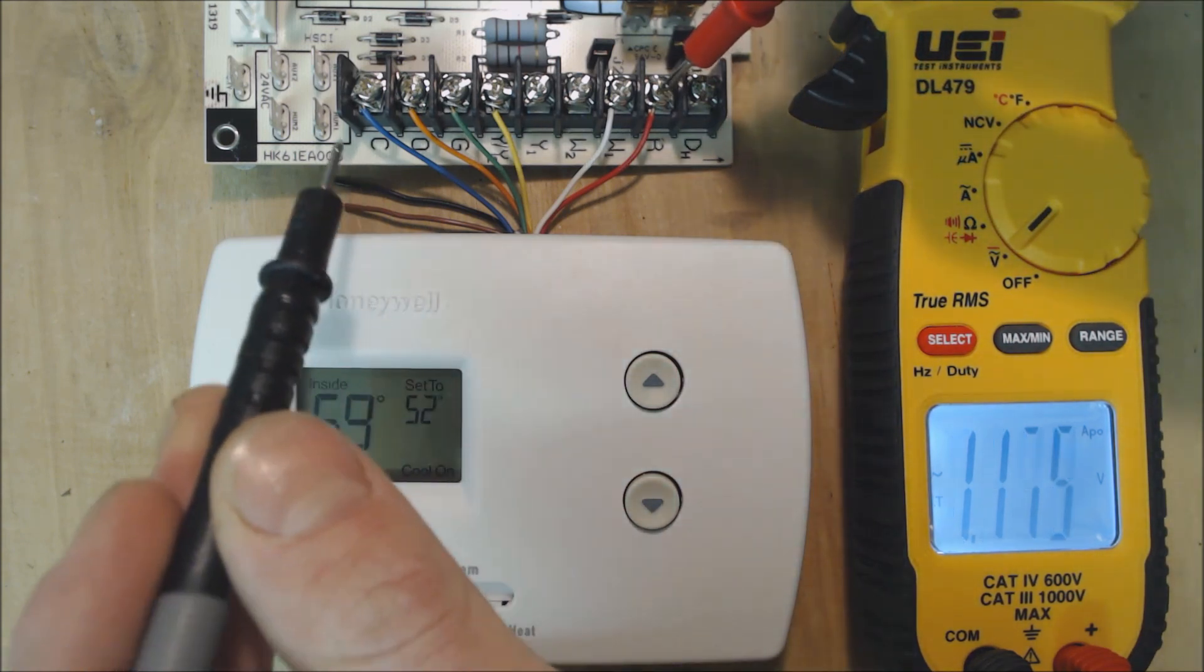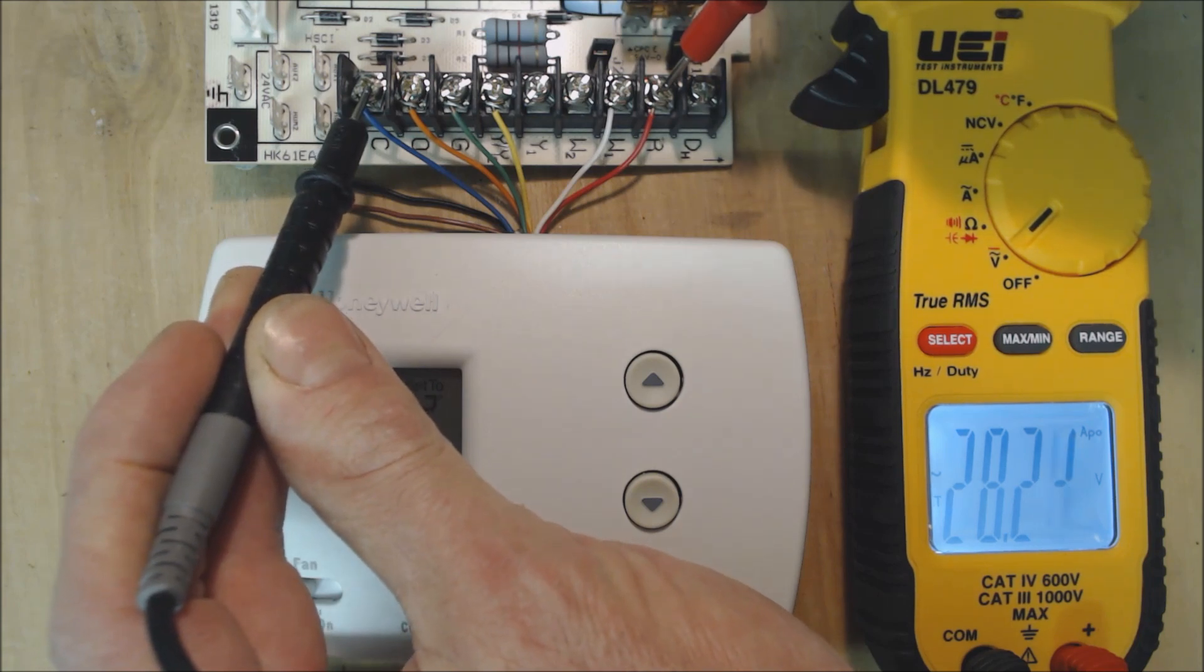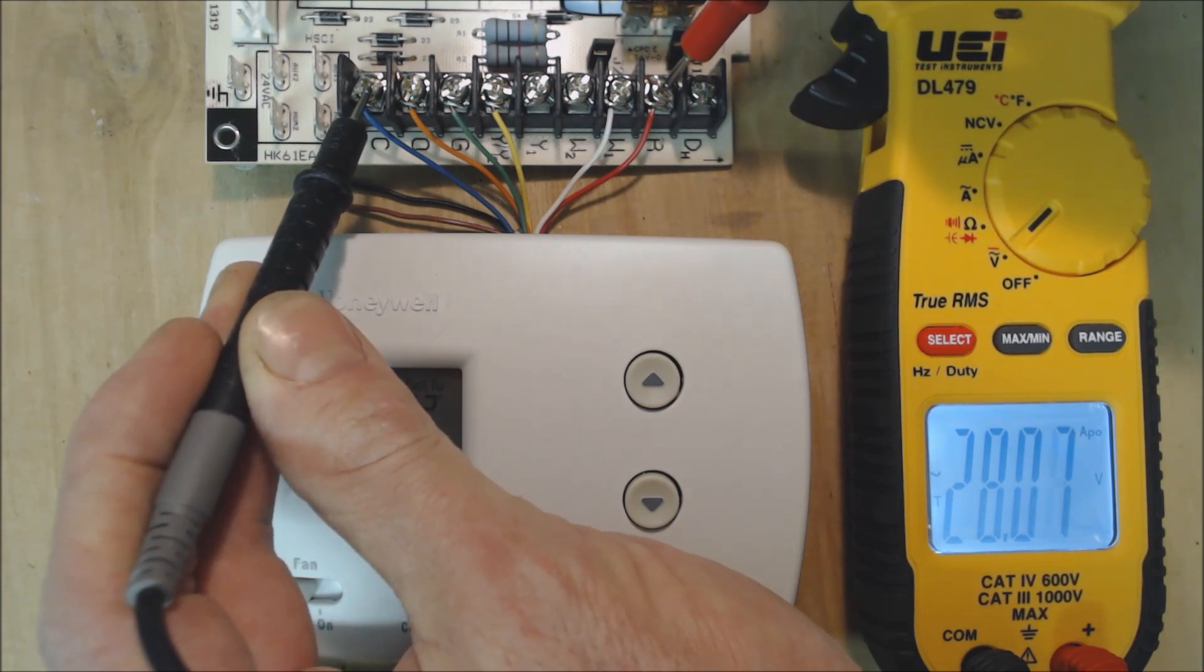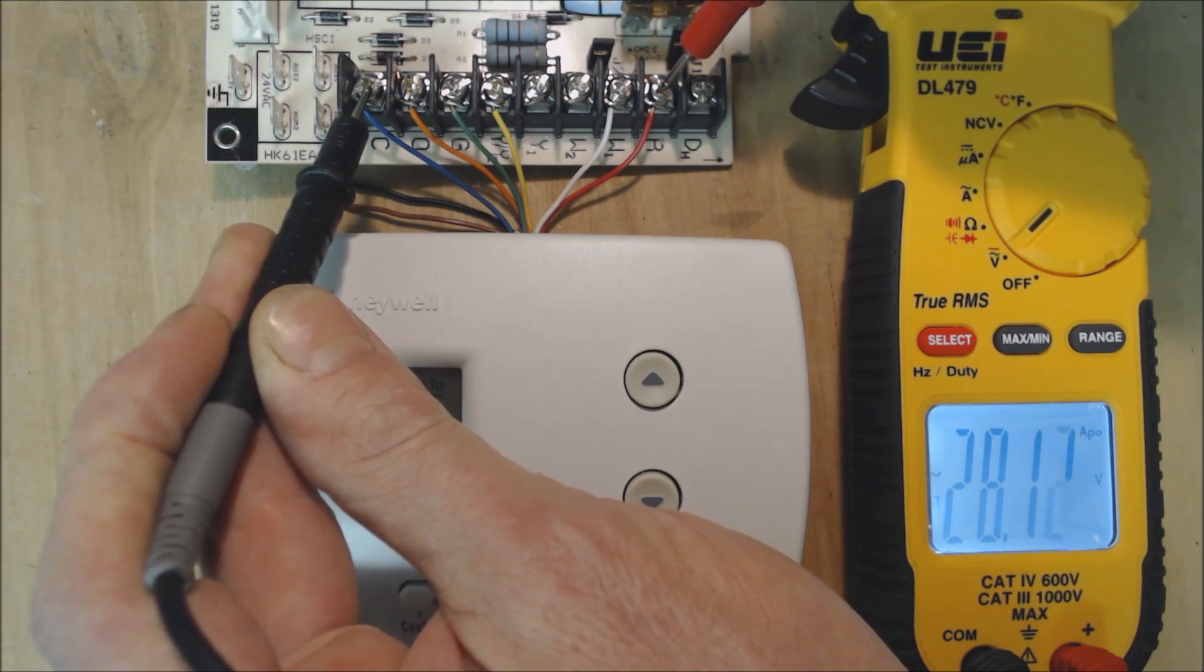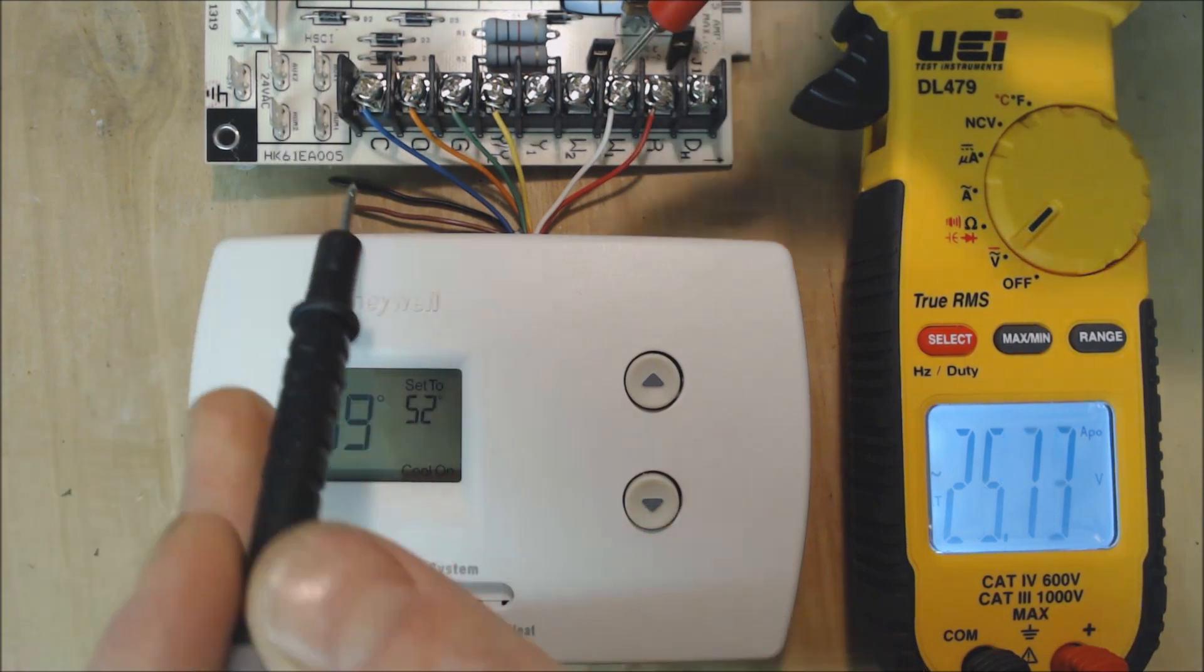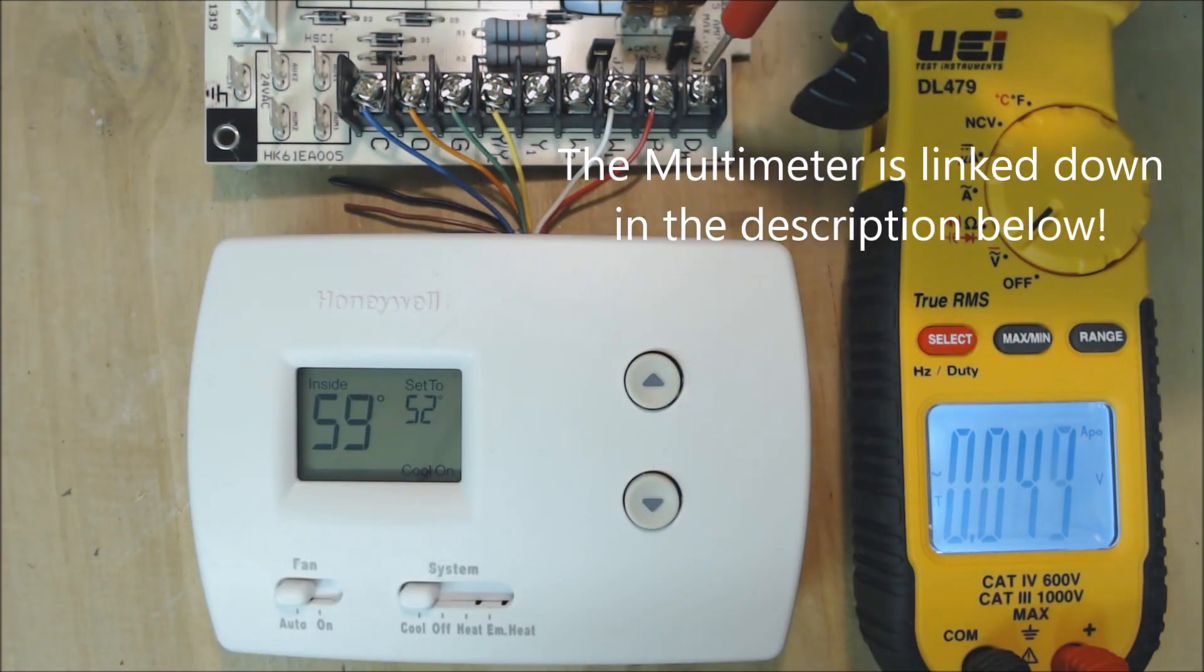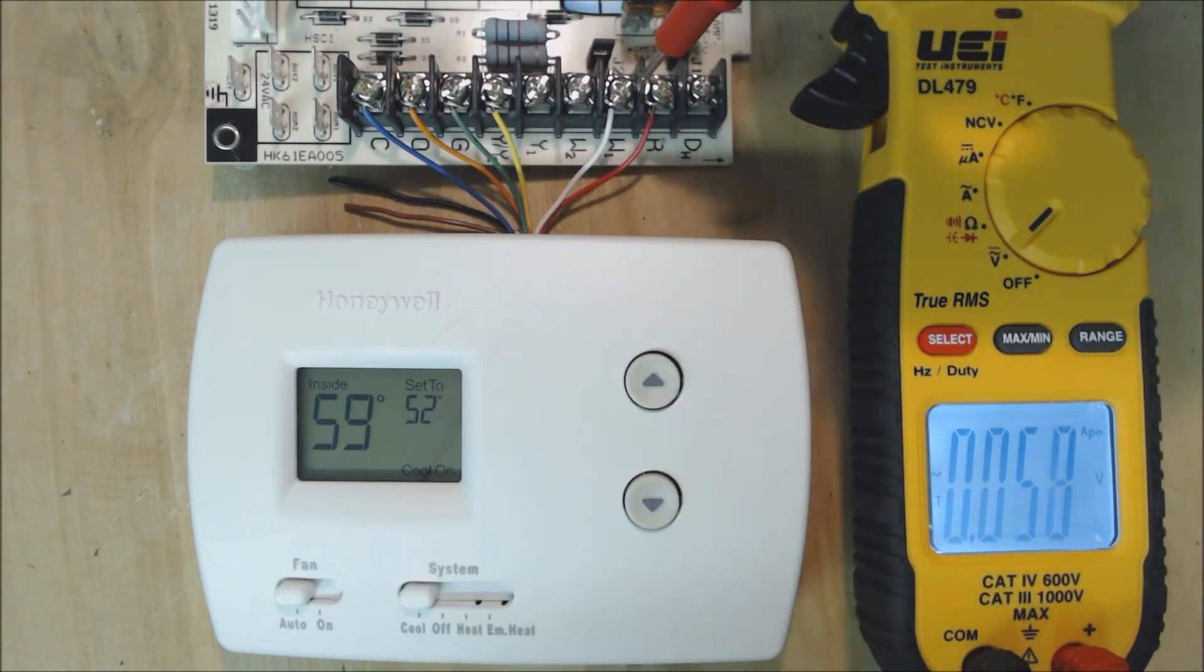We always have 24 volts in the control board between R and common. You see we have 28 volts right there. Anytime you have a good power supply, you're going to have anywhere from 24 to 29 volts. Presently we have 28.1 volts. We can verify that we're sending voltage to the thermostat by reading the indoor air handler's control board.